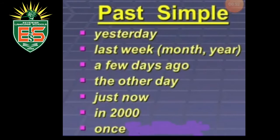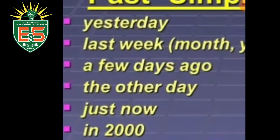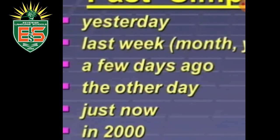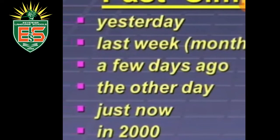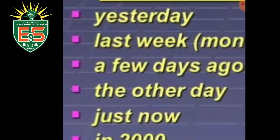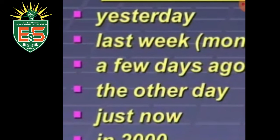Here are keywords for the past simple tense: yesterday, last week, last month, last year, a few days ago — 'ago' is a key keyword — the other day, and just now. 'Just now' means a few moments ago. For example: 'I ate my sandwich just now' means I ate it a few moments ago. Also, in 2000, in 2009, in 2012.